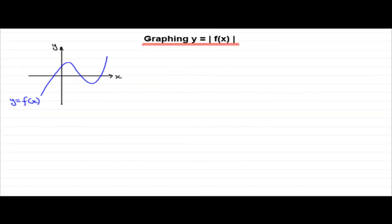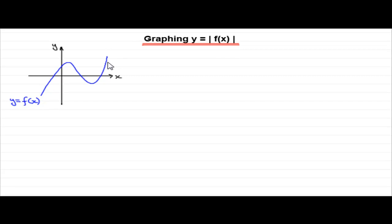In this tutorial I want to show you how we can go about graphing y equals the mod of f(x), where y equals f(x) is any graph. You may remember from an earlier tutorial that the mod function means any negative value becomes a positive value, and all positive values stay positive. So when drawing graphs of y equals the mod of f(x), parts of the graph that are below the x-axis — where y would normally be negative — become positive.